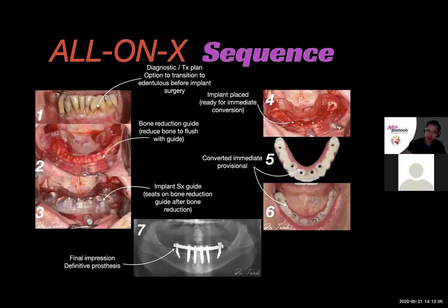The final phase is the fabrication of the definitive prosthesis after healing is complete. The key element of this entire complex protocol is the diagnostic and treatment planning phase, because we need to formulate a sound treatment and execution plan and visualize the final outcome before we actually commit the patient. The first portion of today's webinar covers how to decide if a patient is the right candidate for All-on-X treatment.